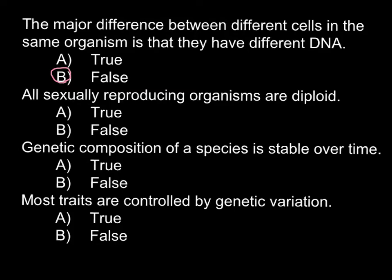Next question: all sexually reproducing organisms are diploid. This is also false, because most animals are diploid, but if we take the kingdom of plants — the Plantae kingdom — many plants are haploid, triploid, tetraploid, pentaploid, hexaploid, and so on. Some are even octaploid. You probably know many plants such as seedless grapes and seedless watermelon.